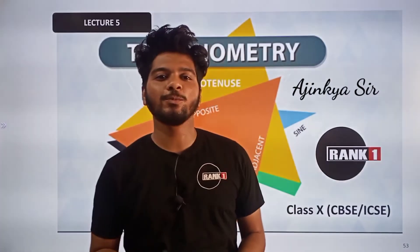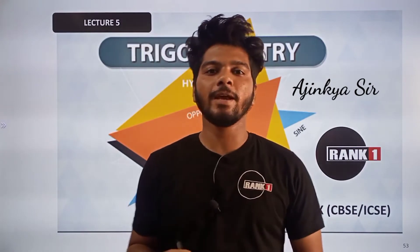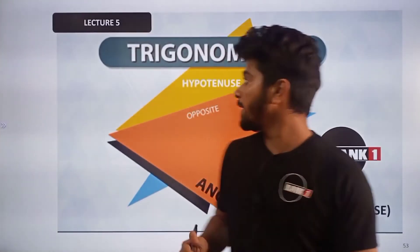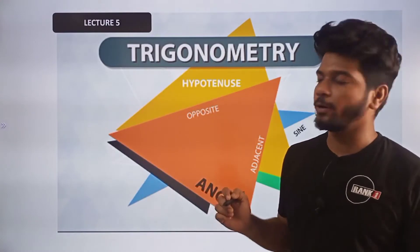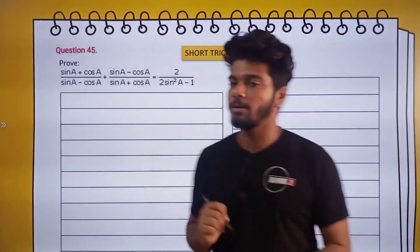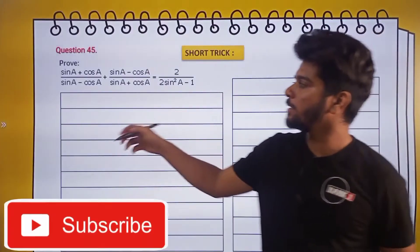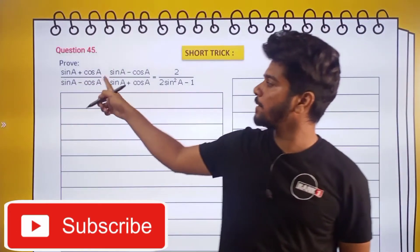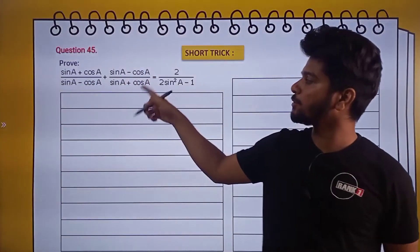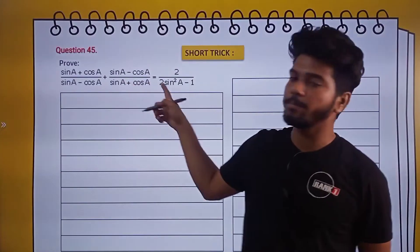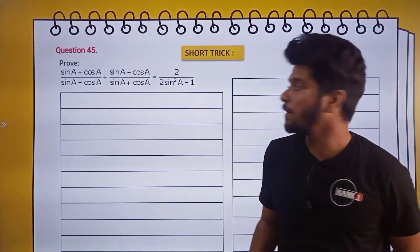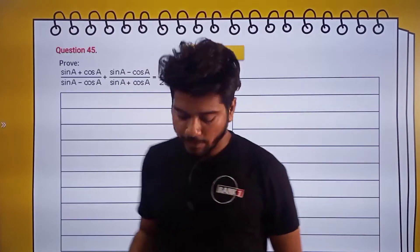Hello students, welcome to my YouTube channel. Today we are continuing with Lecture 5 of trigonometry. We have discussed till sum number 44; we are discussing sum number 45 right now. The question: prove that (sinA + cosA)/(sinA - cosA) + (sinA - cosA)/(sinA + cosA) = 2/(2sin²A - 1).